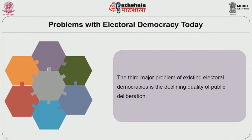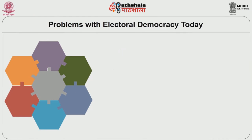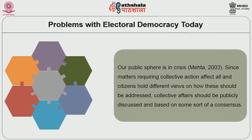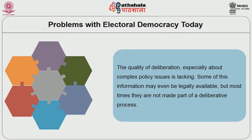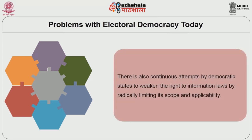The third major problem of existing electoral democracies is the declining quality of public deliberation. Our public sphere is in crisis since matters requiring collective action affect all and citizens hold different views on how these should be addressed. Collective affairs should be publicly discussed and based on some sort of a consensus. Different points of view should have opportunities to express themselves and engage in a public dialogue. However, the public sphere is in crisis given the lack of political information circulating in the political system and the growing distance between state and society. The quality of deliberation, especially about complex policy issues, is lacking. Some information may even be legally available but most times it is not made part of the deliberative process. There are also continuous attempts by democratic states to weaken the right to information laws by radically limiting their scope and applicability.